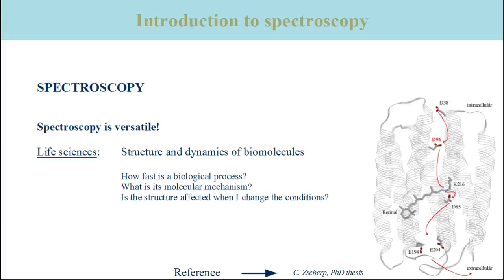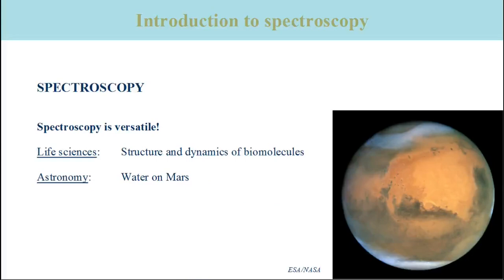In the following, I will give more examples about the use of spectroscopy to illustrate how widespread its applications are. These are all examples from one particular technique, which is infrared spectroscopy. For example, infrared spectroscopy was used to detect water on Mars. This is just one example of how spectroscopy is used to get information about outer space. Nearly all the information that we have from space comes from spectroscopy.